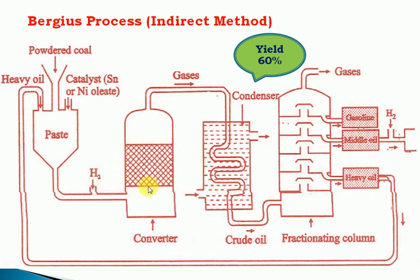The paste is passed into a converter, where it is heated to 490 degrees centigrade at 200 to 250 atmospheric pressure. The conversion reaction takes place, producing a mixture of hydrocarbons in the gas phase. This gas phase is passed through a condenser using cold water and tubes to convert it into the liquid phase as crude oil — a mixture of many hydrocarbons.